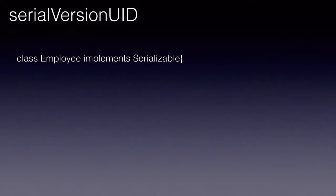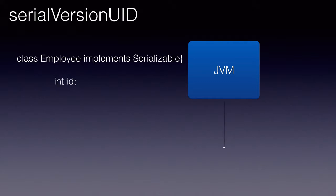In this lecture, you will learn everything about serial version UID, a field often used in the context of serialization and deserialization. Let's take a look at it with an example. I have an employee class which implements Serializable. It has a field ID, and I am serializing the object of the employee class onto the file system with a file name emp.ser.